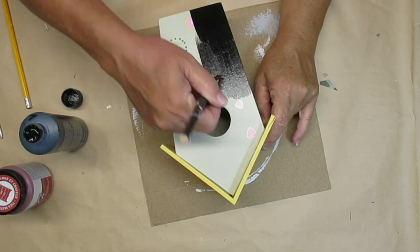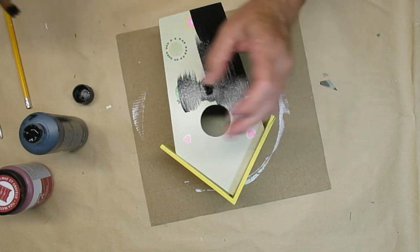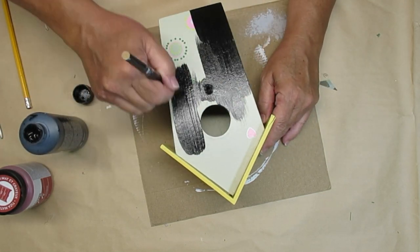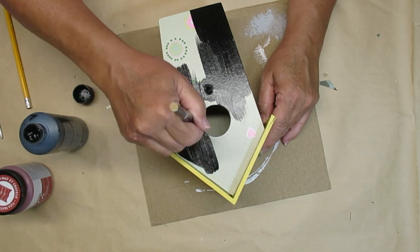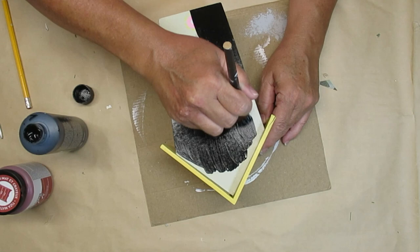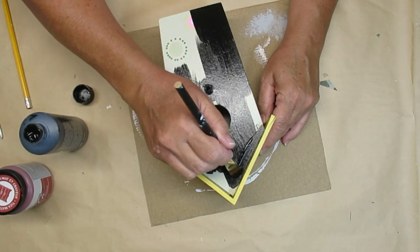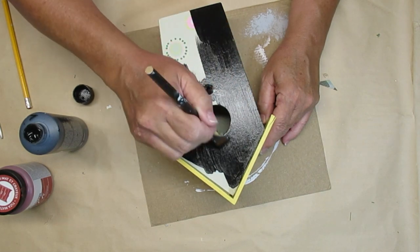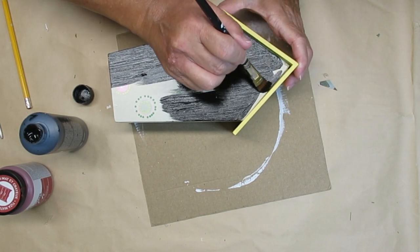I always do at least one birdhouse decor for each season, so I decided to take this large birdhouse that I got at Dollarama for $3.50. I'm going to be painting the bottom portion of it black first because there's a lot of different brighter colors and I want to paint it with that same parchment color. The black will just help to camouflage all of those bright colors and give me more of an even coat when I go on with the parchment.